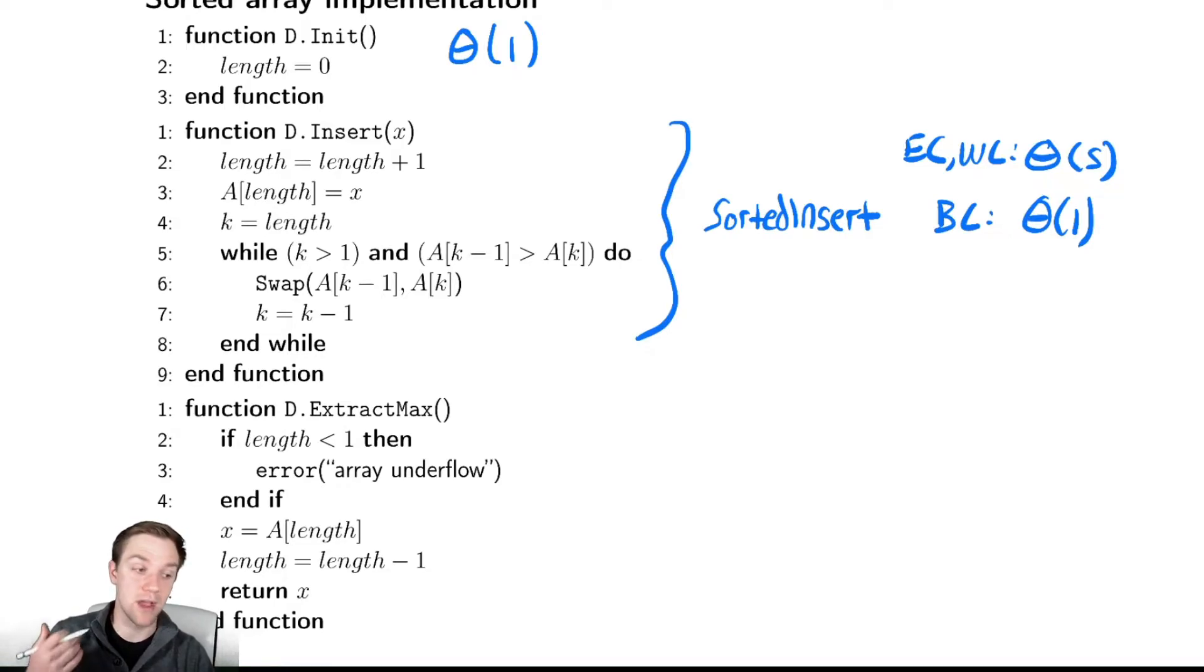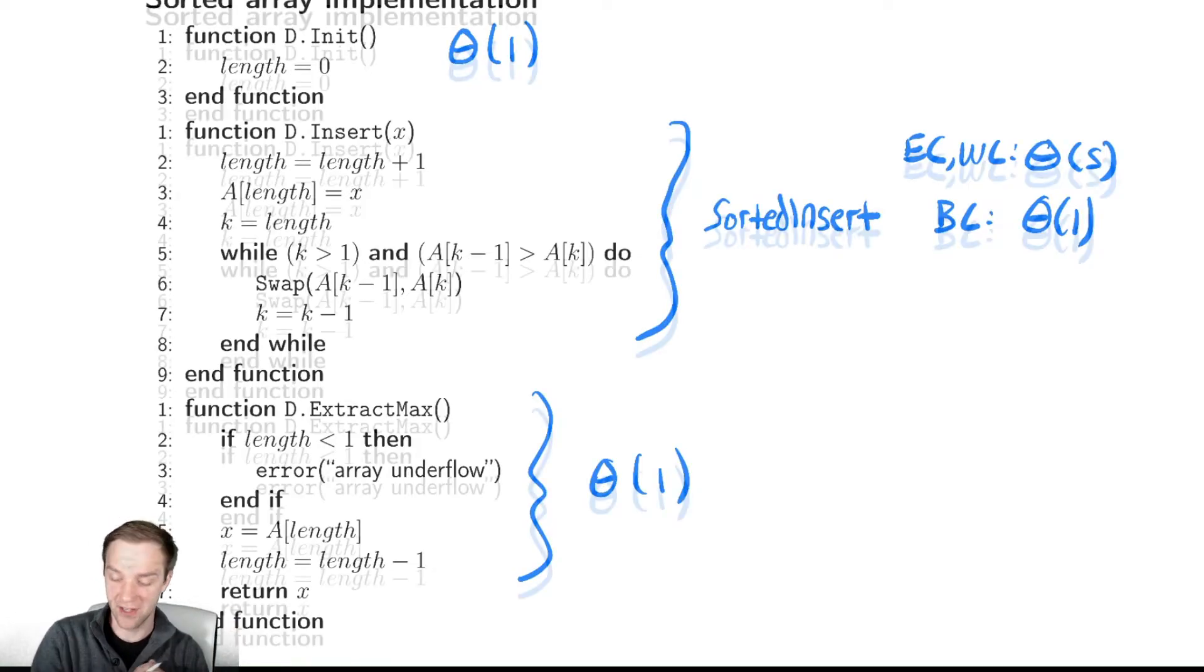Lastly, we need to extract the maximum. If we have a sorted array, the maximum element will always be at the end. Therefore, our extract max method will be in theta of 1. Now we again encounter an interesting trade-off, where we've gained benefits in the extract max method and lost benefits in the insert method.